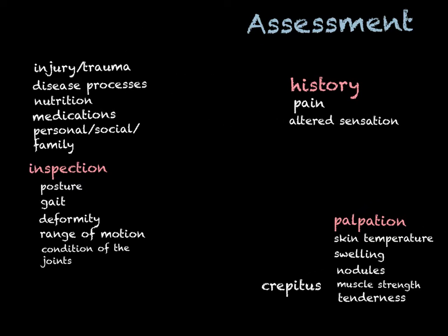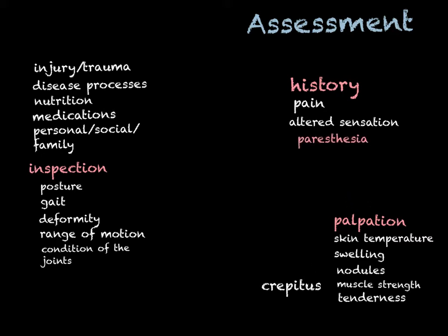Along with pain, you're going to assess for any altered sensation. The word to remember is paresthesia. It's important because it's going to be associated with the five Ps, which we need to know for cast care and anything that might result in neurovascular compromise. Paresthesia can feel like tingling, burning, numbness, or shooting sensations — all important to note.